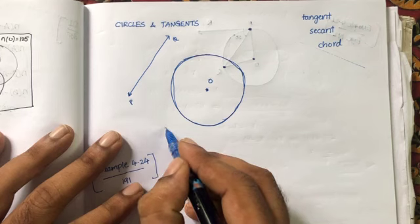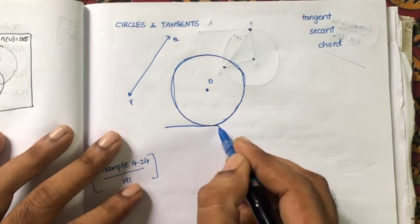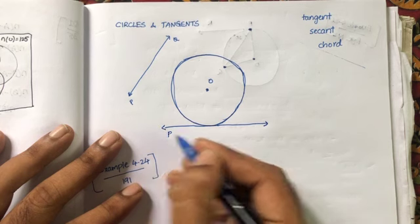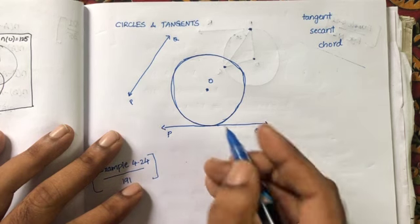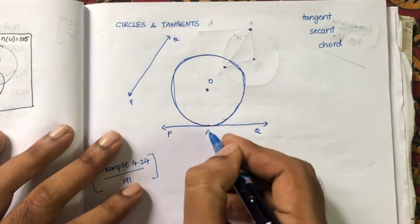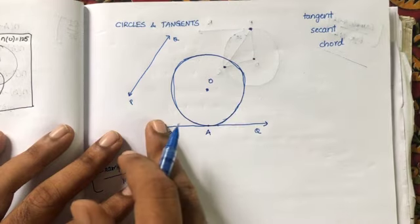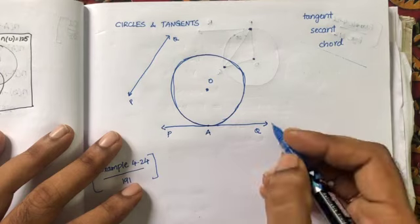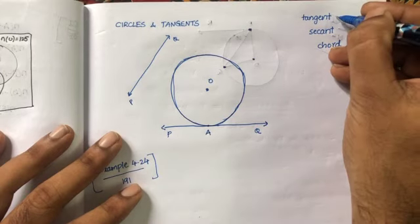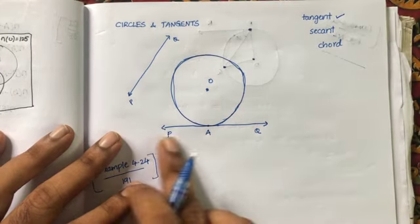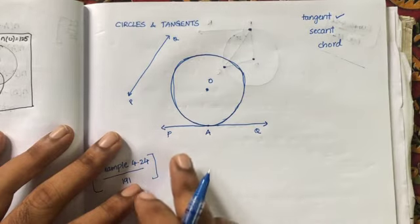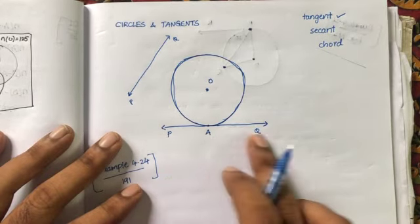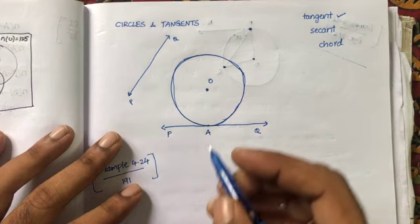In another case, the straight line is meeting the circle at only one point. So we call it a tangent. PQ is a tangent — the line touches the circle at exactly one point. That line is called a tangent.